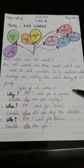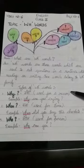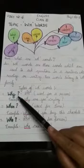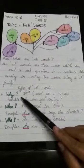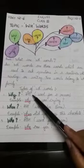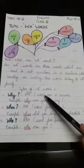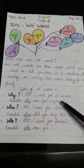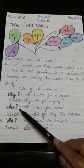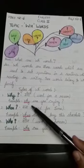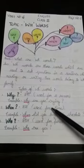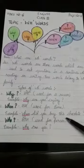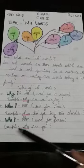Where and how can we identify which WH word is to be used where? Number one is W-H-Y, why. Hindi meaning is kyun. It is used for a reason. Example: Why are you crying? Number two: W-H-E-N, when. Hindi meaning is kab. It is used for time. Example: When did you buy this chocolate?